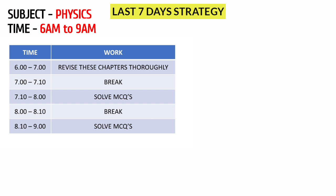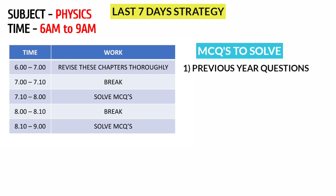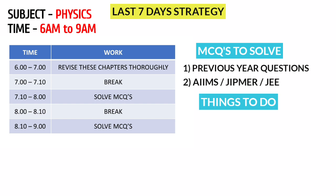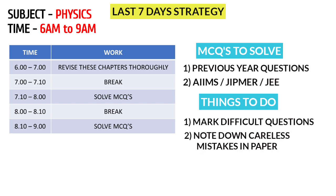Solve previous year questions — AIIMS, JIPMER, or JEE questions. Mark all the questions you find difficult and note your careless mistakes on paper. Follow this next step for the 6 to 9 physics block.